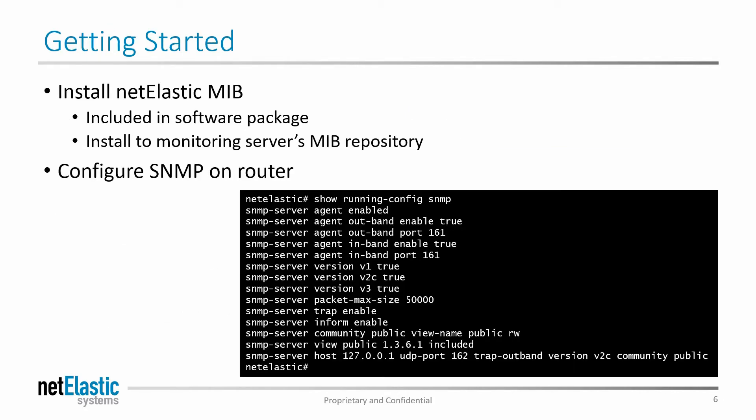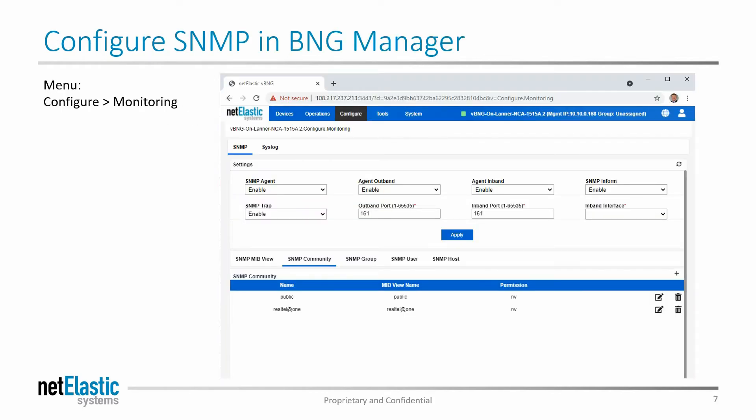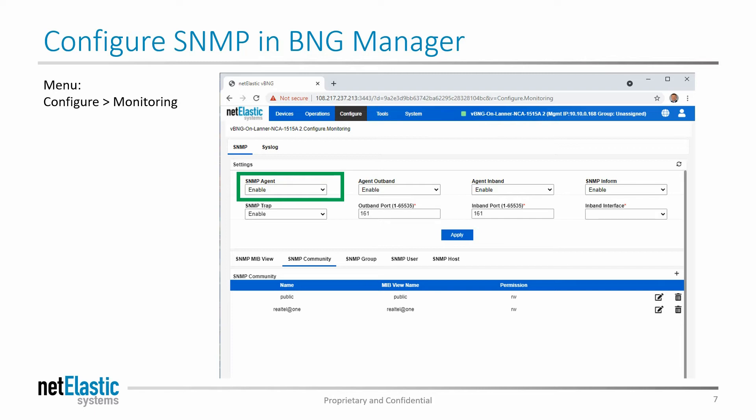So to get started, let's look at how you would get this set up. First, you're going to need to install the Netelastic MIB into your monitoring host. This is already included in our software package, and there are also links to it in our software configuration guide. You're going to want to install the MIB into your server's standard MIB repository where all of the other MIBs are included. And then you're going to need to configure SNMP on the Netelastic router itself. Here's a screenshot of the CLI commands to enable SNMP on our router. But if you're using our web-based management tool, you can also go into the Configure Monitoring menu, and under SNMP, you can start to look at each of the different settings and set them graphically.